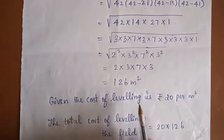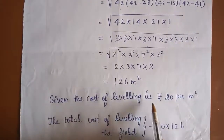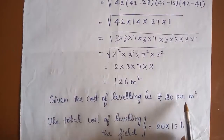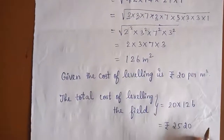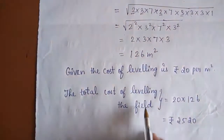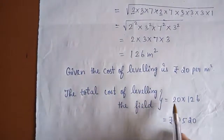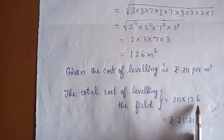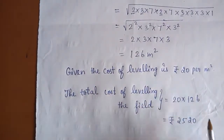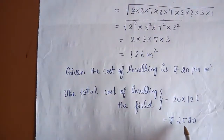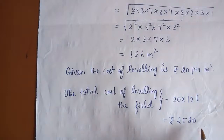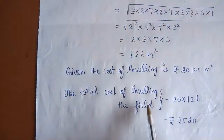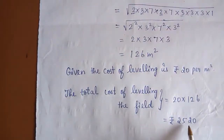The cost of leveling is rupees 20 per metre square. Therefore the total cost of leveling the field is 20 × 126 = rupees 2520. So the cost of leveling the field is rupees 2520.